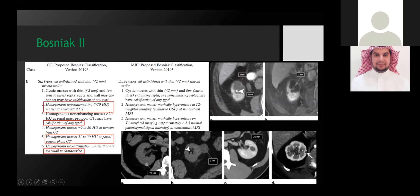Here are some examples: a hyper-attenuating lesion measuring more than 70 Hounsfield units is most likely a hemorrhagic cyst — Bosniak 2. A simple cyst measuring 2 Hounsfield units is Bosniak 2. A cystic lesion with Hounsfield units between 21 to 30 in the portal venous phase is Bosniak 2. And a too-small-to-characterize lesion is also Bosniak 2. For MRI, homogeneous masses markedly hyperintense on T1-weighted images — equivalent to CT hyper-attenuation — most likely represent a hemorrhagic cyst, and both fall under Bosniak 2.